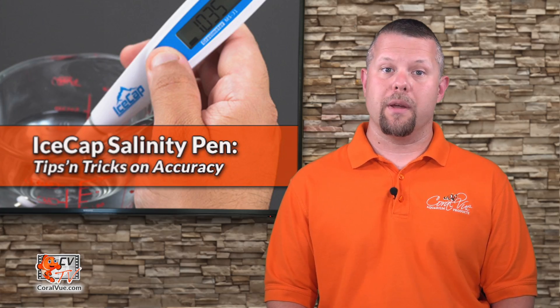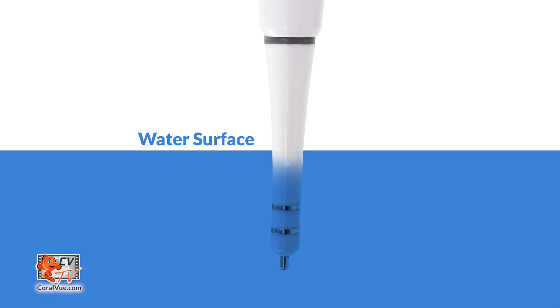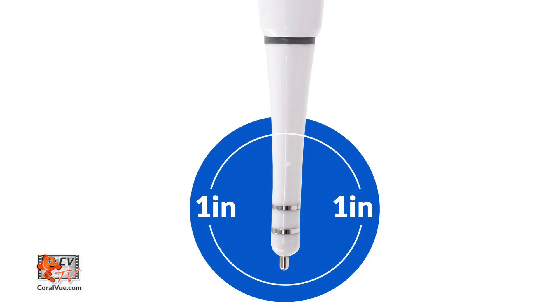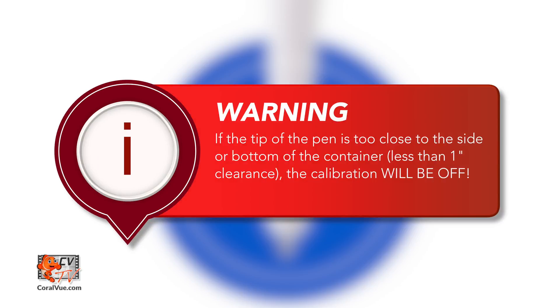When calibrating the pen, be sure to submerge the tip of the pen completely so that the two rings are below the surface. Also, it is very important to ensure that there is a one inch clearance all the way around the tip of the pen. If the tip of the pen is too close to the side or the bottom surface, the calibration will be off.